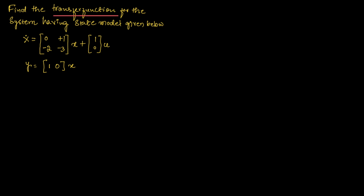To solve this problem, let us use the standard formula for transfer function, which can be written as Y(S) divided by U(S) is equal to C into (SI minus A) inverse, multiplied with B plus D. In this formula, we need to identify the values of A, B, C, and D.